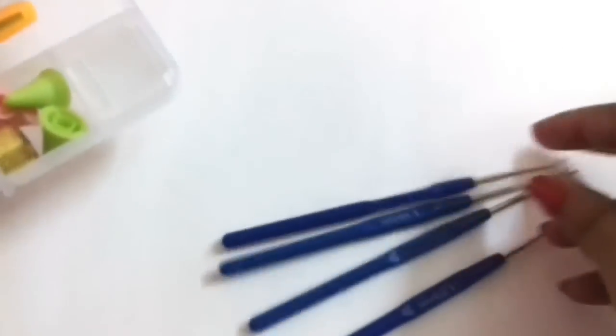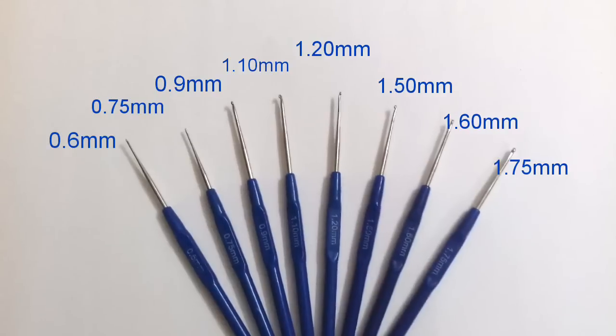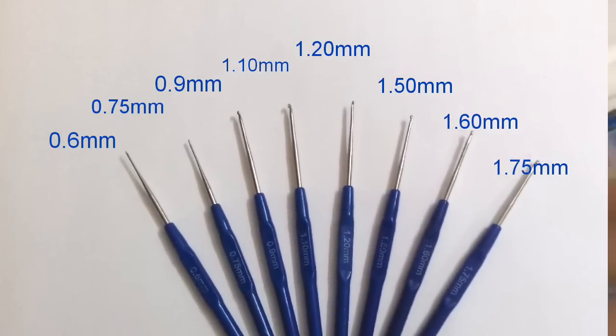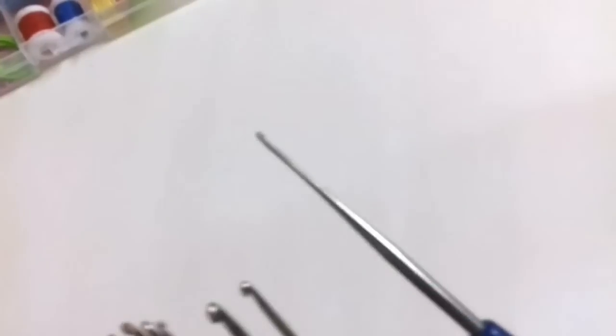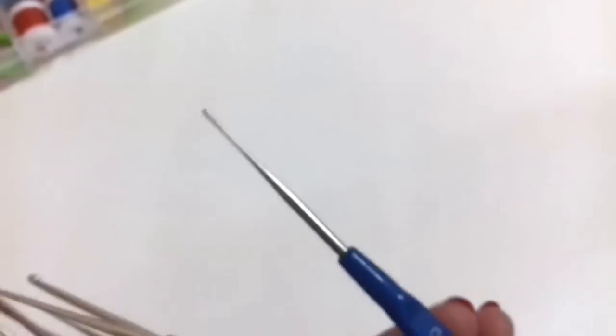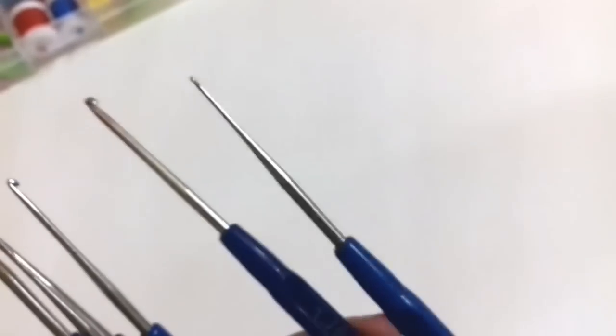In the box there are 8 thread crochet hooks all in blue color. The smallest size is 0.6 mm and the biggest one is 1.75 mm.